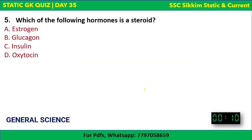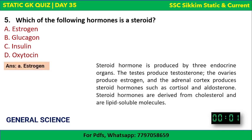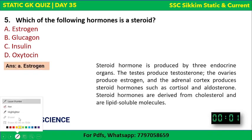Next question: which of the following hormones is a steroid? Options: estrogen, glucagon, insulin, or oxytocin. Your time begins now. The answer is estrogen, but let's first understand what a steroid is.